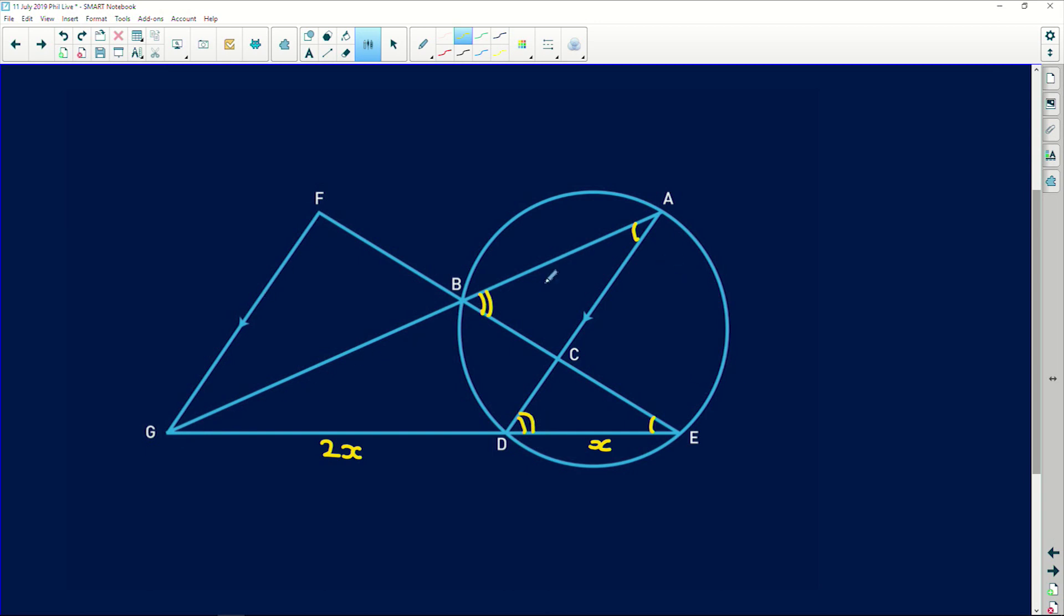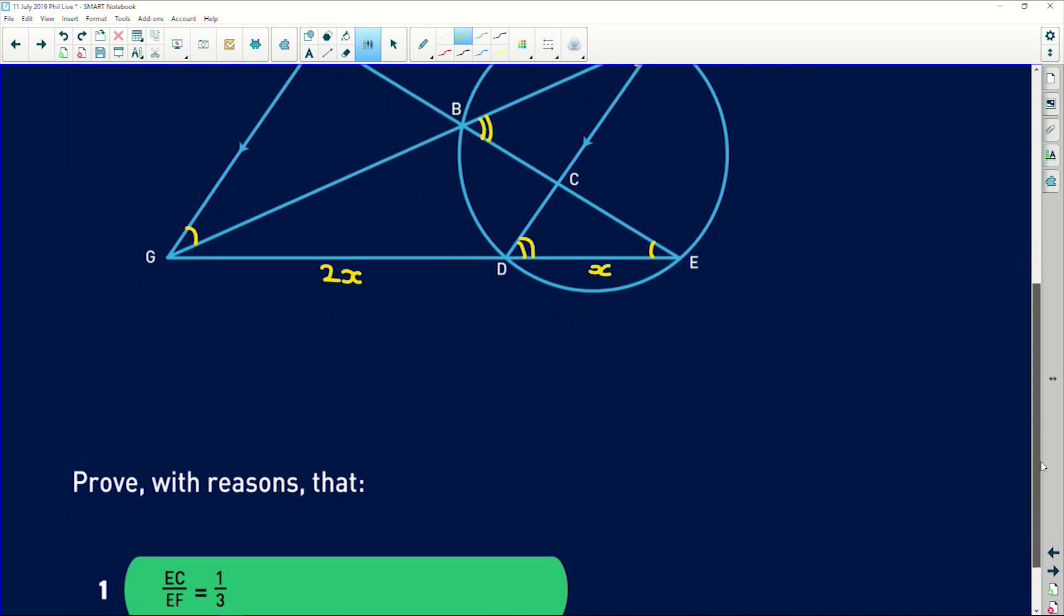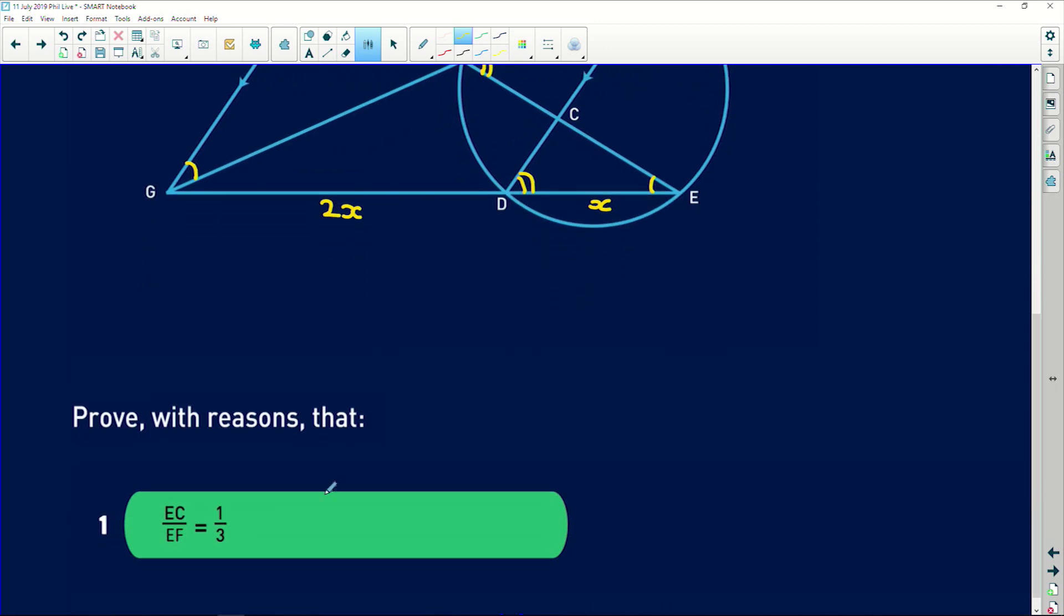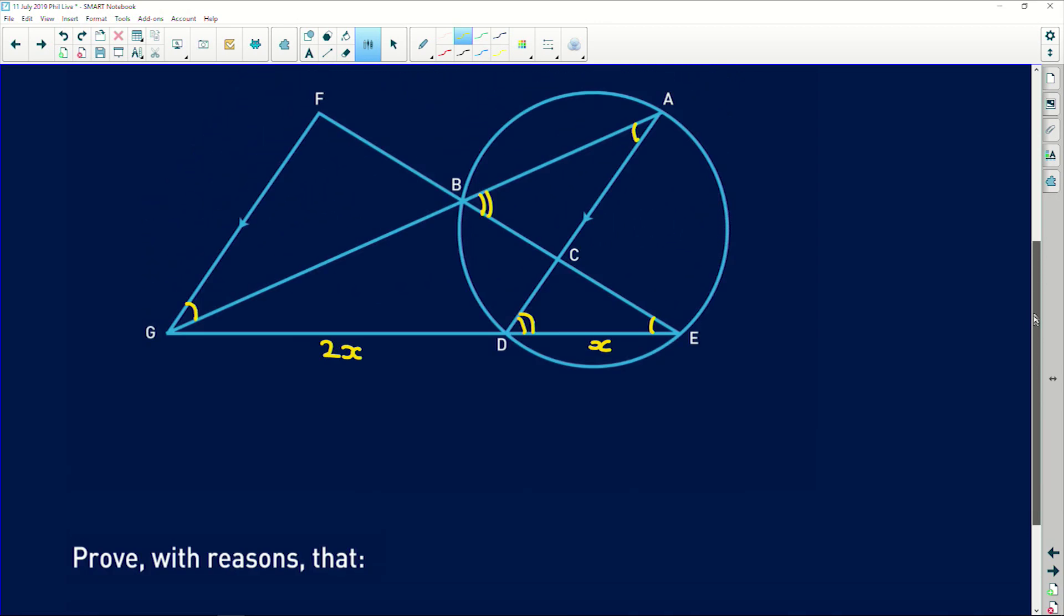Then obviously, we've also got a bunch of parallel line angles. So we know that this angle EGA is equal to that angle A because alternate angles are equal with these parallel lines. Okay, so immediately you can mark off equal stuff on your diagram. But firstly, it says, prove with reasons that EC over EF is equal to 1 over 3.